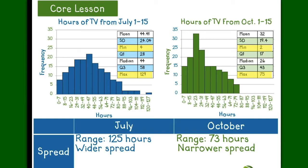And now, since both graphs are skewed, let's examine the middle 50% of the data using the interquartile range. July is more varied, having an interquartile range of 30 hours, while October is less varied with 26 hours.